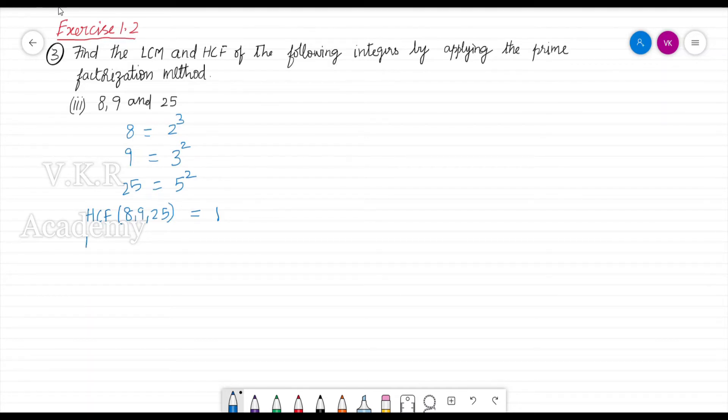Now let's find their LCM. LCM of 8, 9 and 25. Write down all the distinct prime factors of the given numbers. They are 2, 3 and 5.